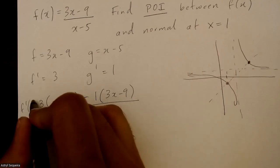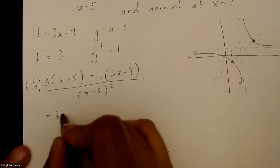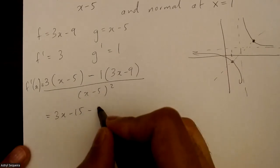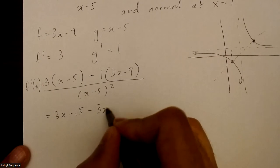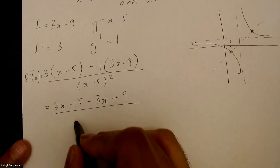This is my f prime x. I'll just simplify this a bit. So 3x minus 15 minus 3x plus 9 over x minus 5 squared.